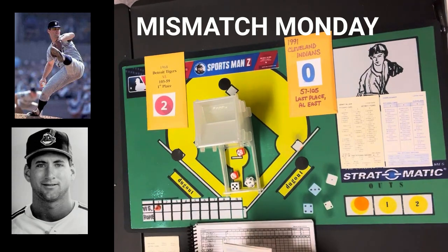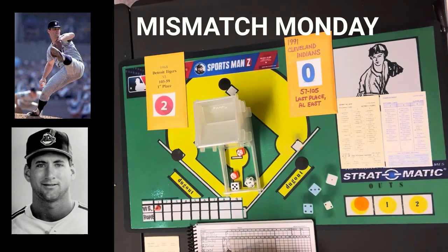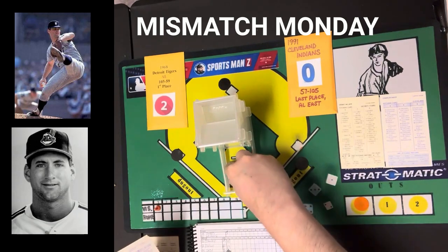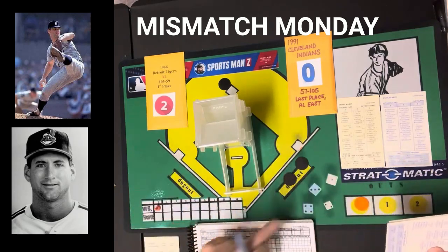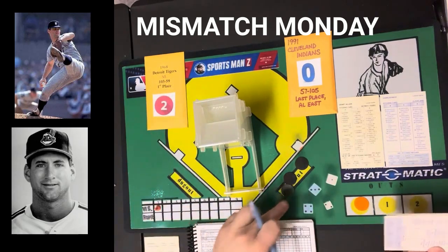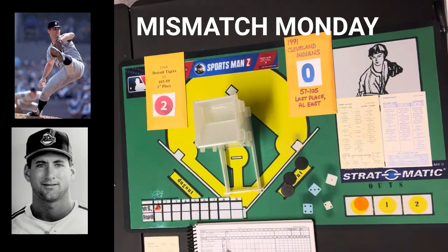The Indians lineup: Alex Cole leading off in center, Felix Fermin at short batting second, Carlos Baerga at third batting third, Albert Belle in right batting cleanup, Carlos Martinez as DH batting fifth, Mike Aldrete at first batting sixth, Mark Lewis at second batting seventh, Joel Skinner catching and batting eighth, Chris James in left batting ninth. They'll be facing Denny McLain, who won 31 games in 1968, going 31-6 with a 1.96 ERA.